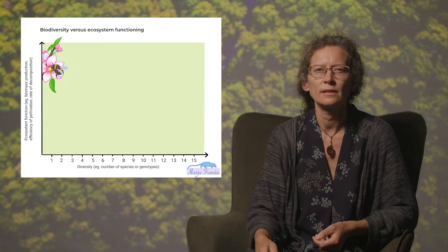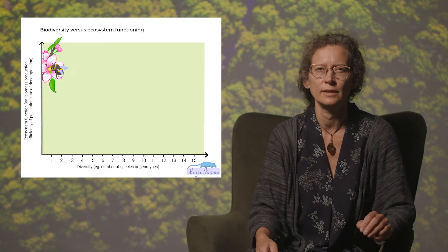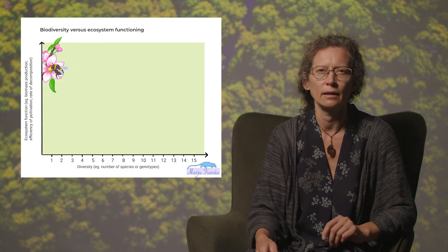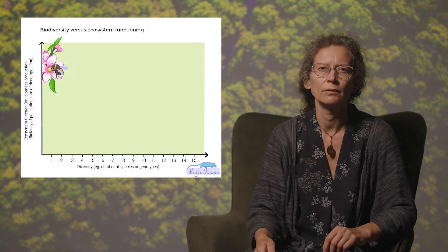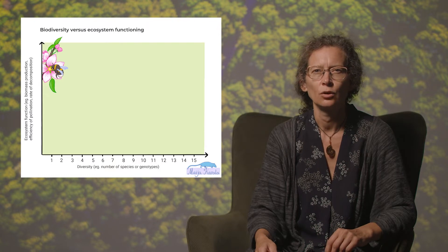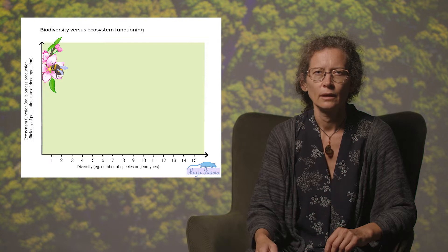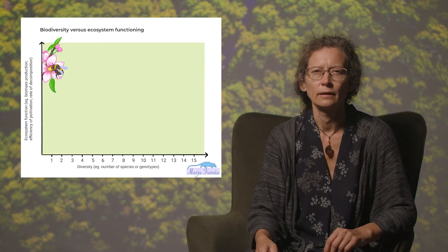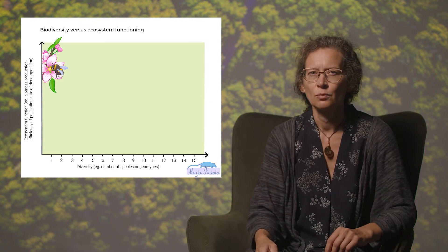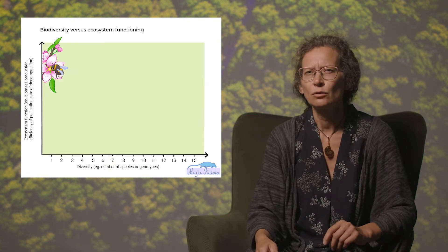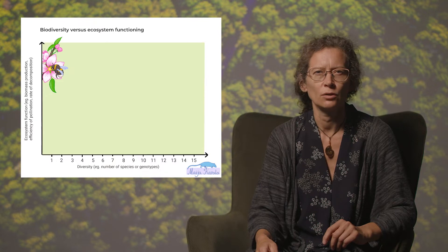Let's imagine this as a simple response curve between the increase of biodiversity — for example number of species or number of genotypes on the x-axis — and the level of ecosystem functioning, say efficiency of pollination or yield on the y-axis. Take a pause now and think what kind of relationship curve you would expect, and why. And don't look for a single right answer, because there is none.